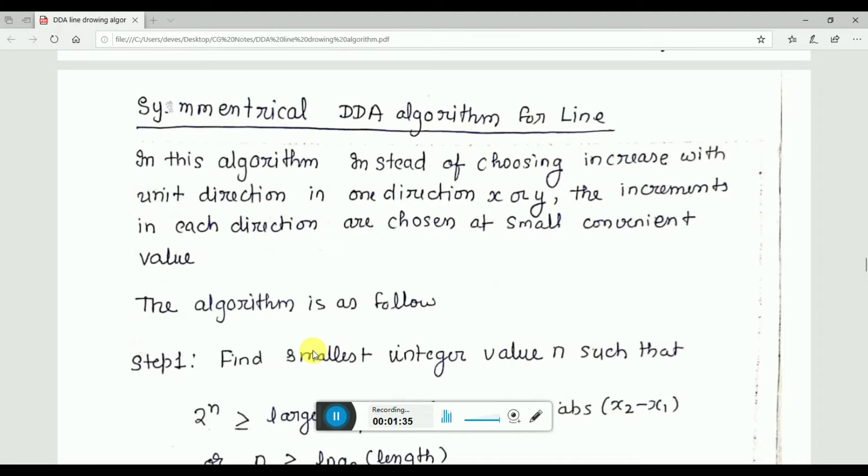But in the case of symmetrical DDA, what exactly happens? Instead of increasing unit direction in one direction x or y, what we are going to do is increase in each direction by choosing some small convenient value. We will symmetrically increase in both directions. That is the basic difference. If x increases constantly by 1 in one direction or y, we will compute the values in both directions.